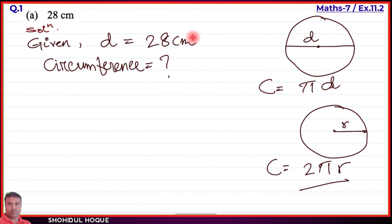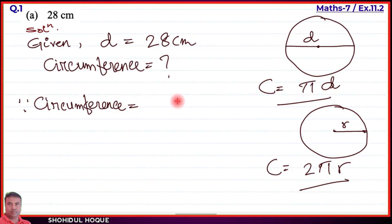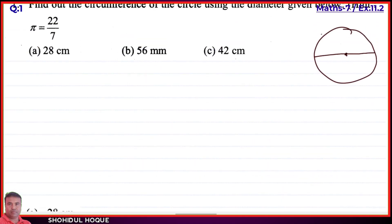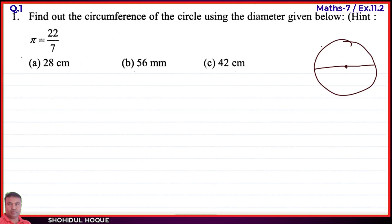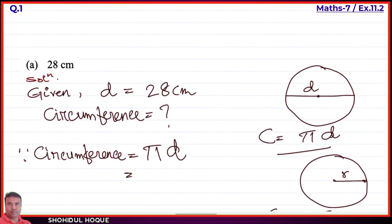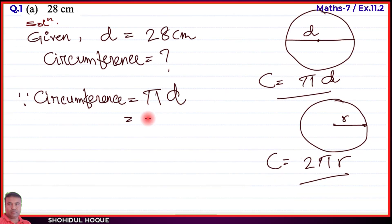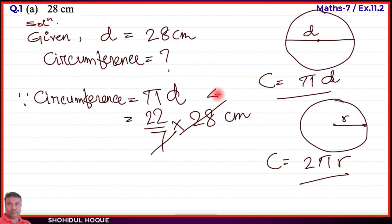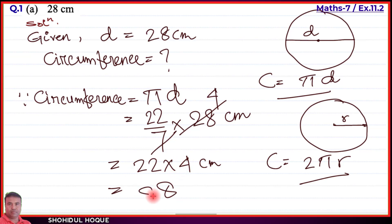For part A, since we have the diameter, we use: circumference C equal to pi times d. Substituting pi equal to 22 by 7 and d equal to 28 centimeters: C equals 22 by 7 into 28 cm. 7 cancels into 28 giving 4, so C equals 22 into 4 centimeters, which equals 88 centimeters.